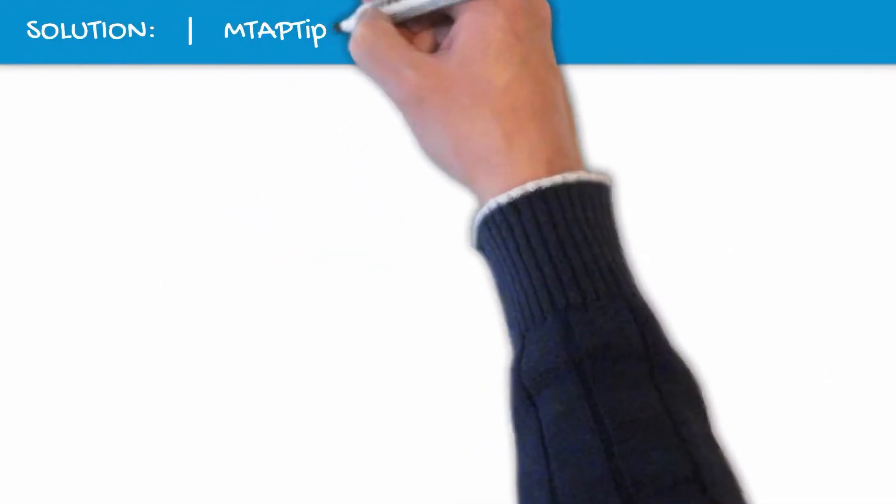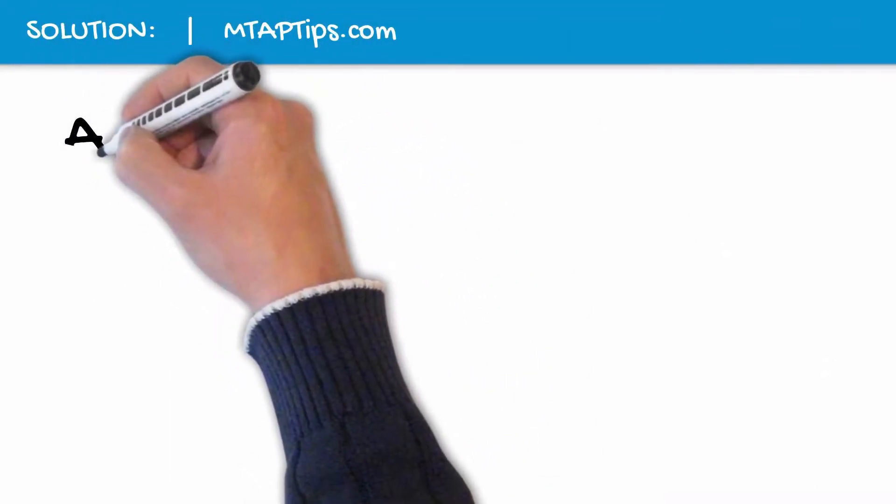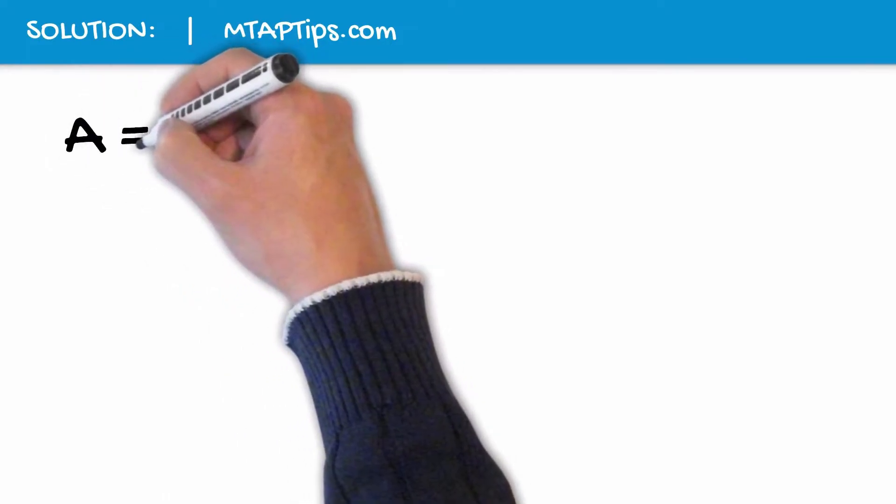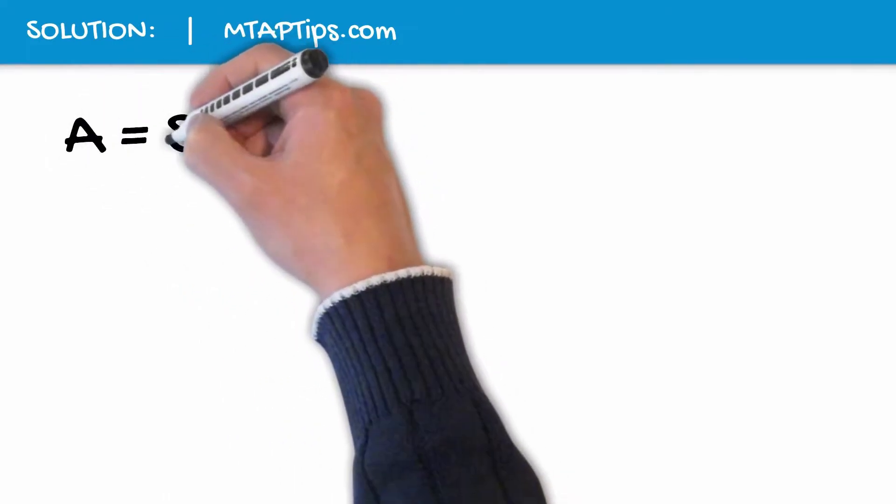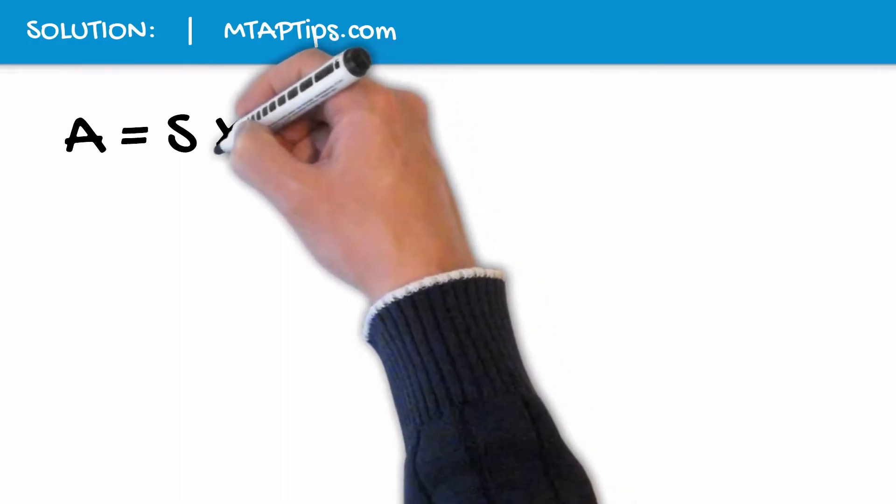To get the area of a square, the formula would be A, which is the area, is equal to S, which is the side, times S.